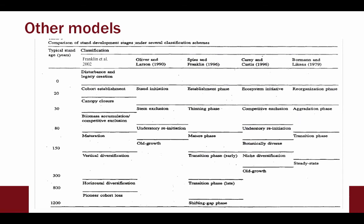Oliver and Larson's model is just one model when we think about stages of stand development. There are other models — Franklin and colleagues, for example, extends out to 1,200 years. We don't have many forests in the Lake States that are that old compared to maybe the West Coast. Each forest type and system is slightly different. Oliver and Larson does a good job of capturing growth and development in certain forest systems, capturing a lot of the developmental trend in the Lake States, but it is not the only model.